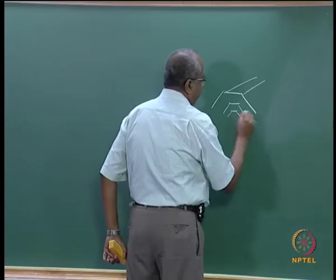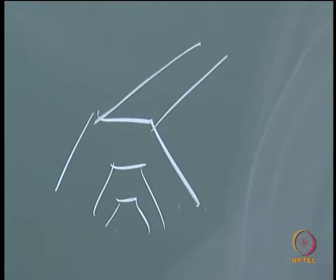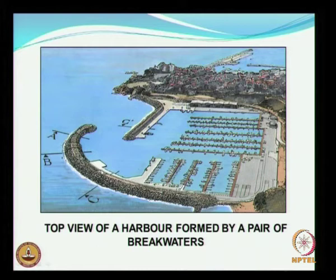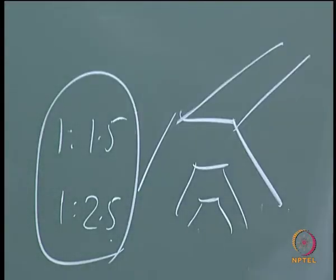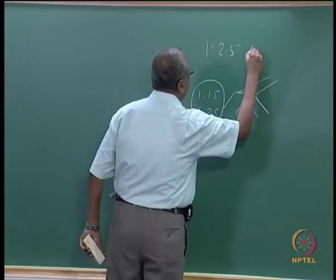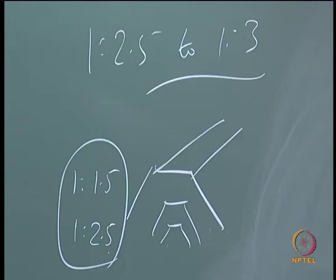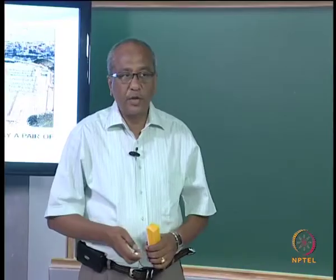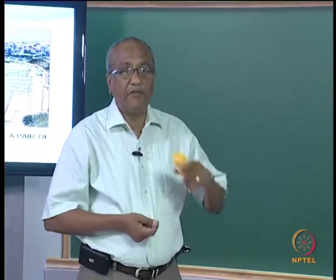The side slopes for the trunk portion are typically 1:1.5 to 1:2.5. The head portion has a flatter slope, maybe 1:3, so it occupies more material. The size of stones used for both trunk and head are the same, but a flatter slope is adopted for the head because at the head, waves come from different directions.